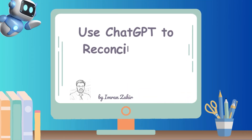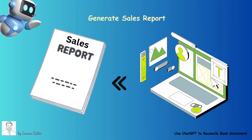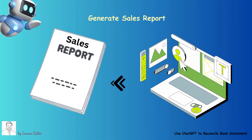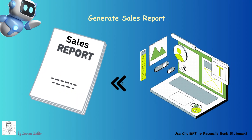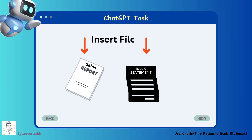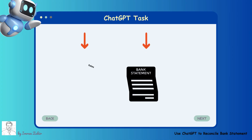In this lesson, we will use ChatGPT to reconcile the sales report with the bank statement. We generate the sales report of the month from Tradegeco and obtain the bank statement from our bank. Insert the PDF of the sales report and bank statement into ChatGPT and use this prompt for reconciliation.